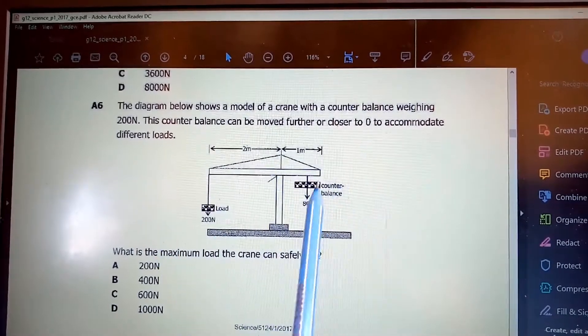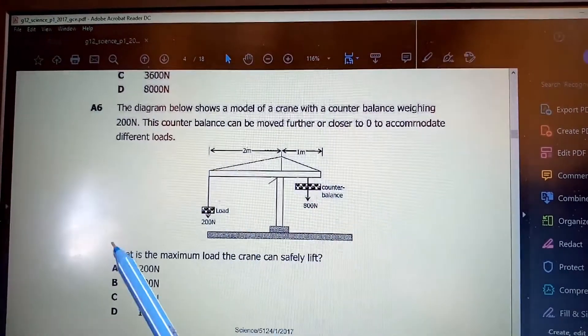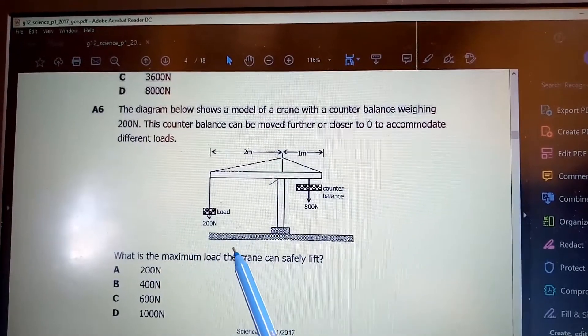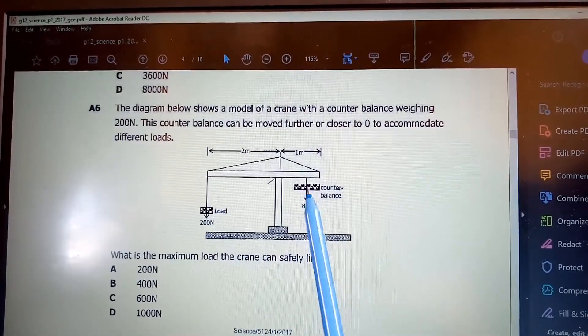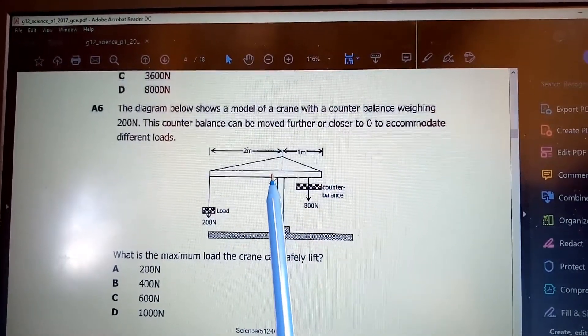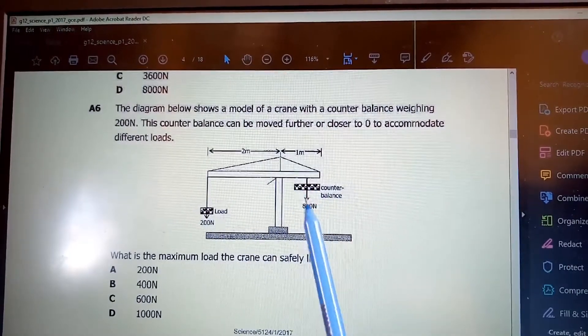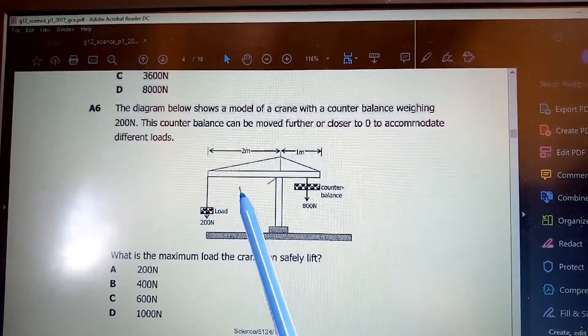So in order for us to lift the maximum load, then the counterbalance should be at the far end of this side of the crane. To find it, we are going to balance the moment, meaning the clockwise moment should be equal to the anticlockwise moment.